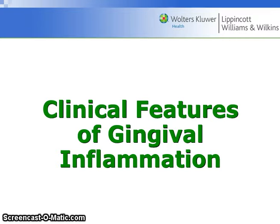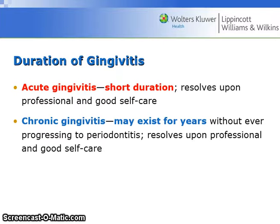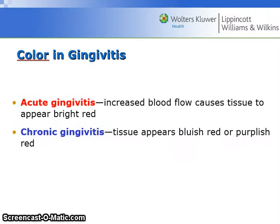Clinical features of gingival inflammation in disease: plaque biofilm at the gingival margin stimulates the host immune response. The inflammatory response to bacteria results in clinical changes involving the free and attached gingiva and papilla. Acute gingivitis is of short duration and resolves upon professional and good self-care. Chronic gingivitis may exist for years without ever progressing into periodontitis, and also resolves upon professional and good self-care.